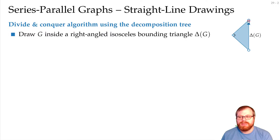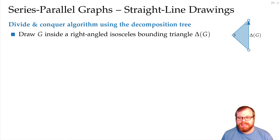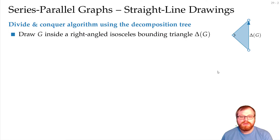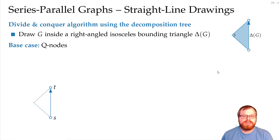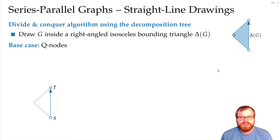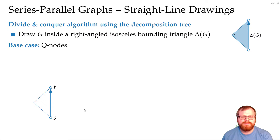So we have a triangle like this and all the vertices have to lie inside this triangle. In the base case, we just have a Q node. Those are very easy — it's just an edge, so clearly they lie inside such a triangle.